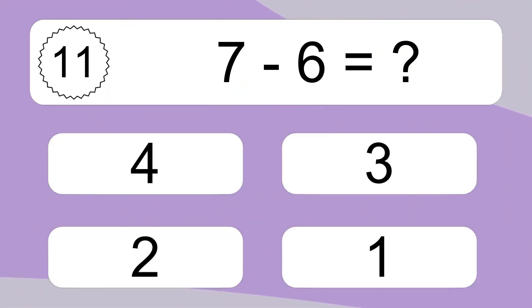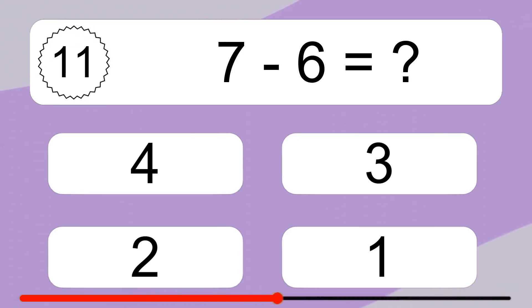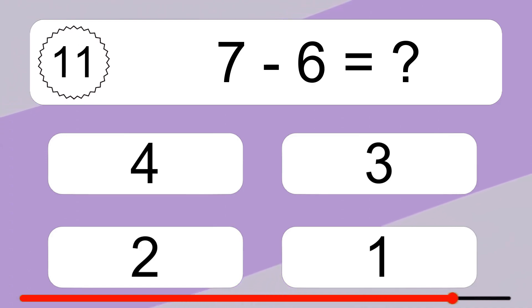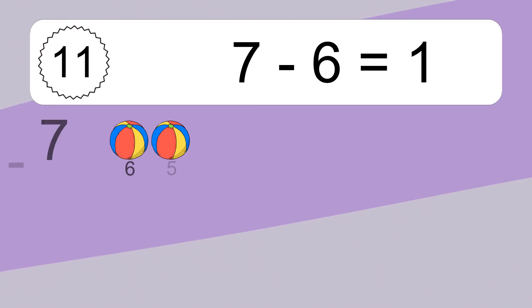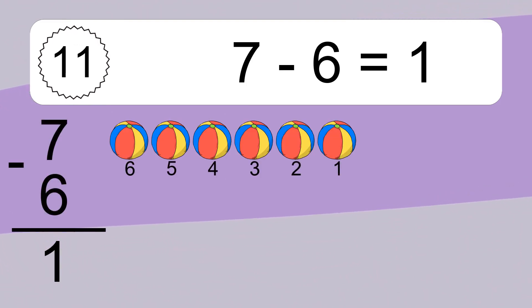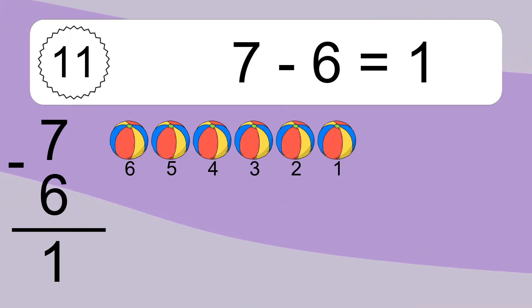7 minus 6 equals what? 7 minus 6 equals 1. Let's count it: 6, 5, 4, 3, 2, 1.